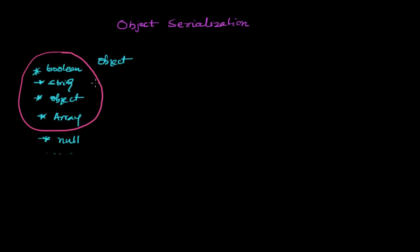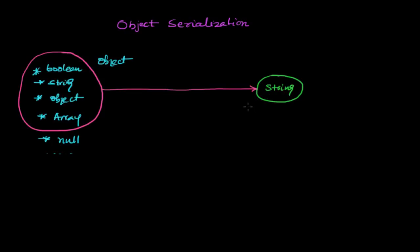Object serialization is the process by which you convert any object to a string. This string format is called JSON format — JavaScript Object Notation. The question is why do we need this transformation, also called stringification. This process is called stringification and you can do it using the method JSON.stringify, into which you can pass any object.